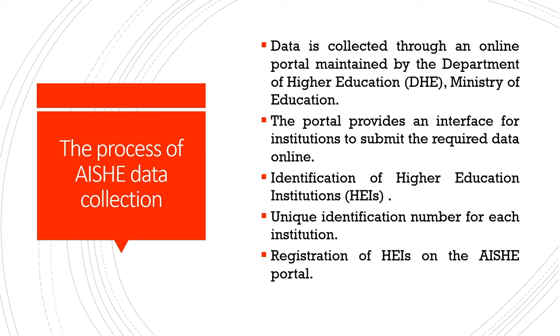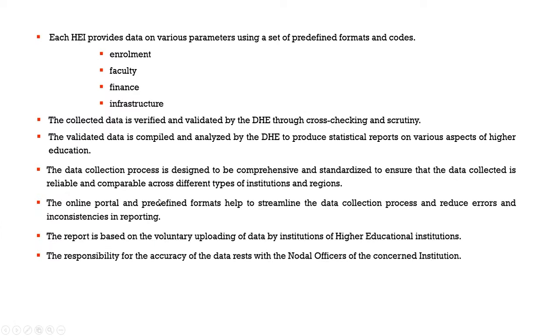The trend analysis can show, for example, whether there is growth in medical education, engineering education, or arts and humanities — and apparently it is arts and humanities that have grown rapidly in the country. The AISHE data collection process uses an online portal maintained by the Department of Higher Education, providing an interface for institutions to submit data online. Institutions have unique identification numbers and register on the AISHE portal. Collected data is then verified and validated through cross-checking and scrutiny, compiled and analyzed into statistical reports. The report is based on voluntary uploading of data by higher education institutions.